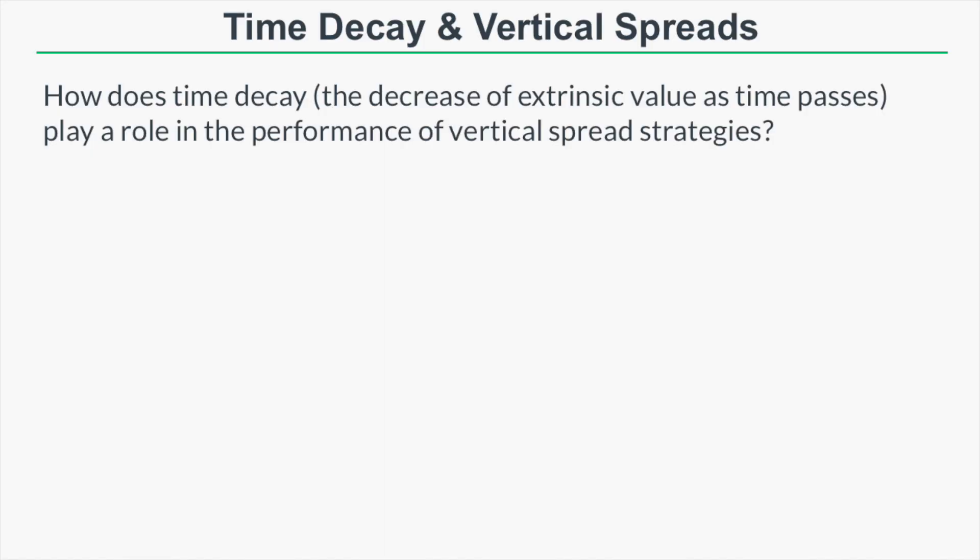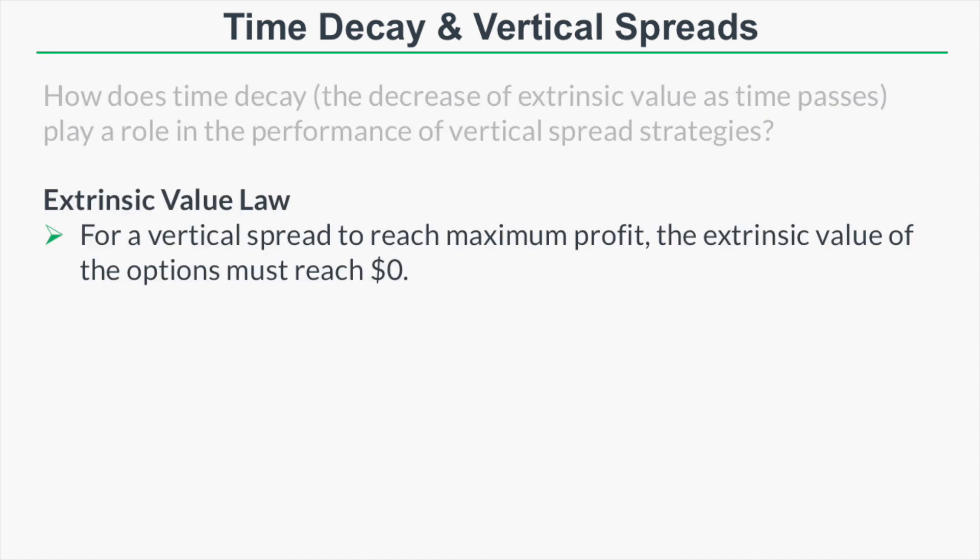So how does time decay — the decrease in extrinsic value as time passes — play a role in the performance of the four vertical spread strategies? I'll answer this question by starting with a definition of something I'll call the extrinsic value law as it relates to vertical spreads. The extrinsic value law means that for a vertical spread to reach maximum profit potential, the extrinsic value of the options in that spread must reach zero dollars.